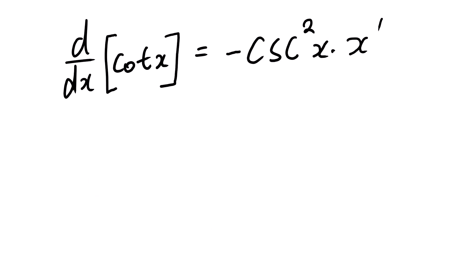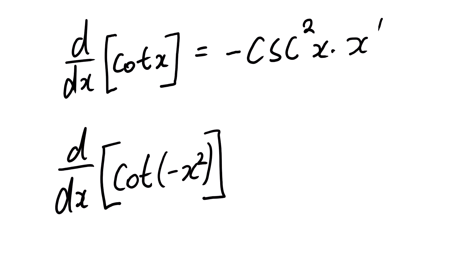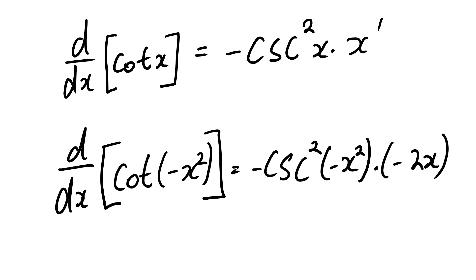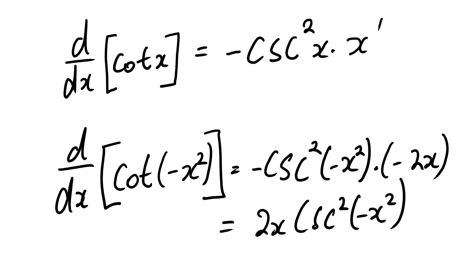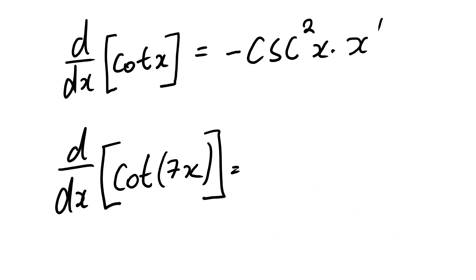The derivative of cot x equals negative cosecant squared x times the derivative of x. For example, the derivative of cot(−x²) equals negative cosecant squared(−x²) multiplied by the derivative of −x², which is −2x, giving 2x cosecant squared(x²). The derivative of cot(7x) equals negative cosecant squared(7x) multiplied by 7, giving −7 cosecant squared(7x).